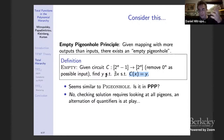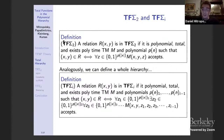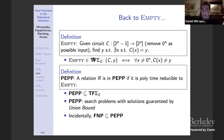This motivates the definition of TF sigma_2: total search problems in functional sigma_2, where the verifying machine M is such that for (x,y) in the relation, for all z of polynomial length, M(x,y,z) accepts. Analogously you can define a whole hierarchy TF sigma_i. The EMPTY problem is in TF sigma_2, and we define the subclass PEPP (polynomial empty pigeonhole principle) as those total relations polytime reducible to EMPTY. You should think of PEPP as those search problems where totality is guaranteed by the union bound.